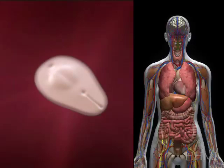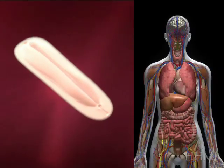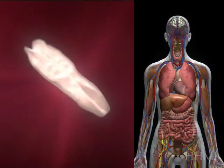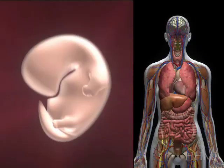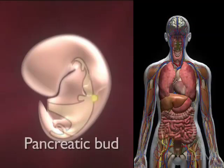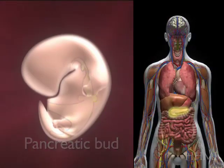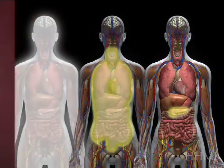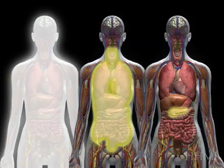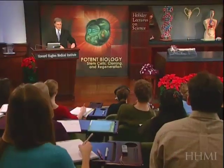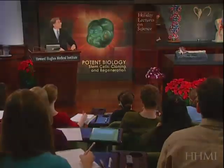To give one more detailed example of this, let's think about the development of the endoderm — in this case, the formation of the pancreas. There's the pancreatic bud, which comes out of the endodermal derivative. I'm going to talk about the pancreas as one example of how an organ and the cell types within that organ get made.